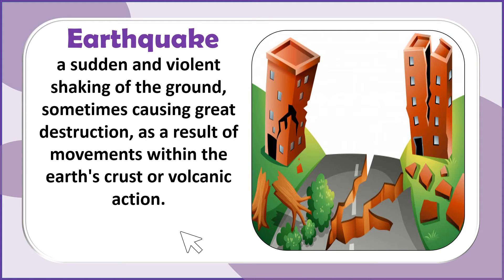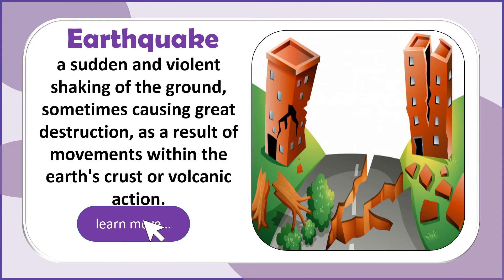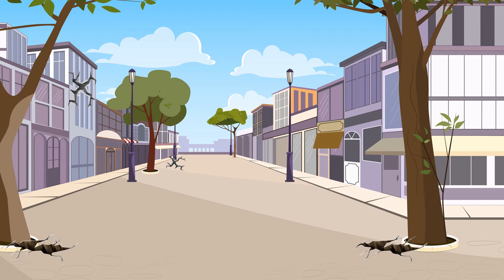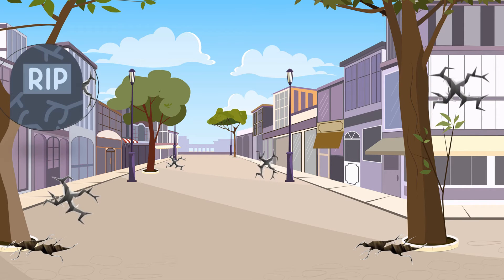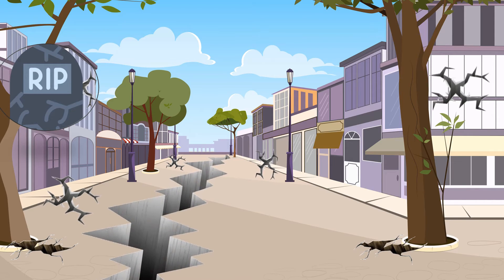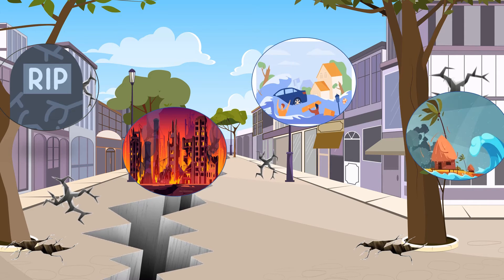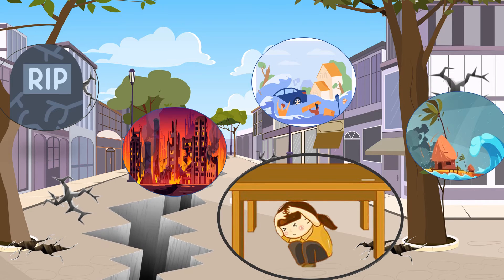Earthquake is a sudden and violent shaking of the ground, sometimes causing great destruction as a result of movement within the Earth's crust or volcanic action. It may cause injuries and deaths. It destroys buildings, roads, and properties, and may lead to secondary effects like landslides, fires, floods, and tsunami. What can we do if there's an earthquake? If you're inside the room, find a table and go under it.